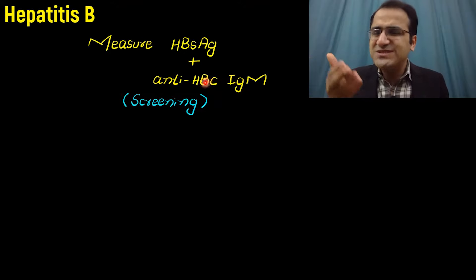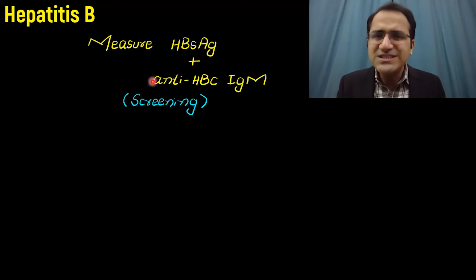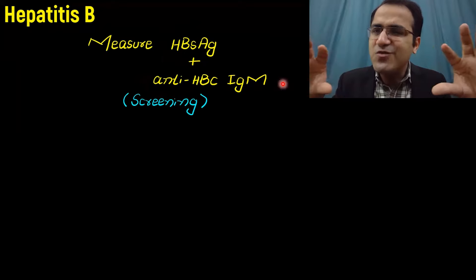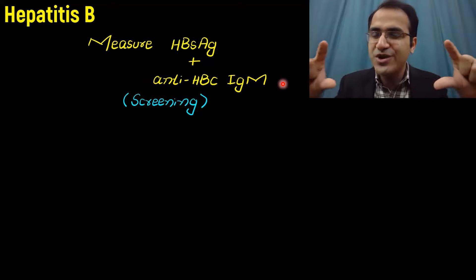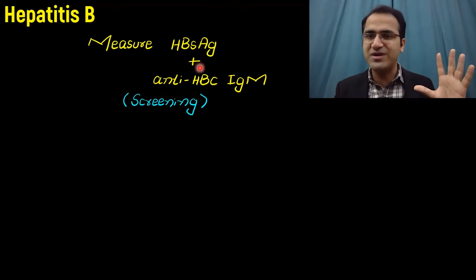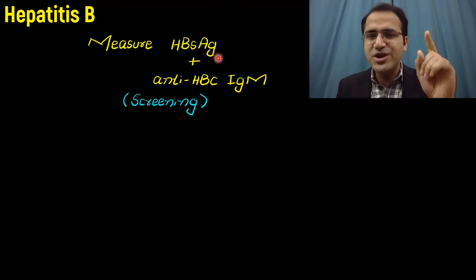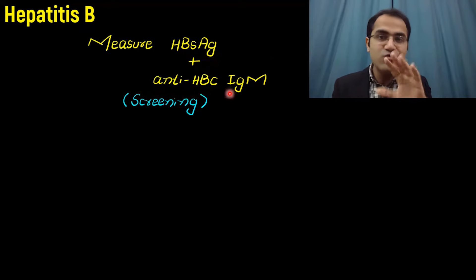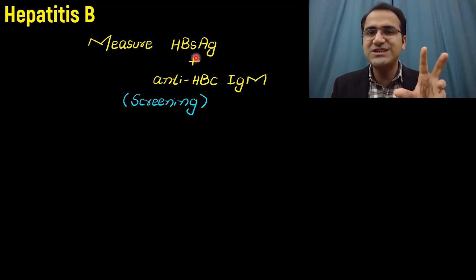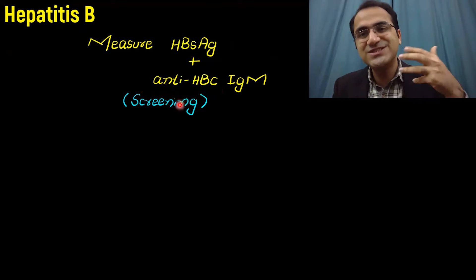The reason we detect anti-HBc IgM alongside HBsAg is because of the window period. In the window period of hepatitis B infection, hepatitis B surface antigen is negative even though the patient is still infected. In that window period, only anti-hepatitis B core IgM is positive. So to avoid missing the infection, we use anti-HBc IgM for screening, which catches infection even during the window period.